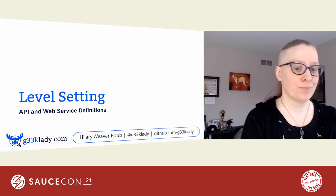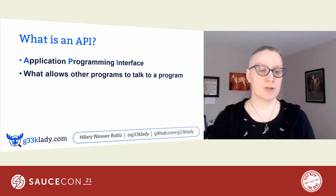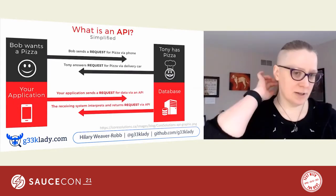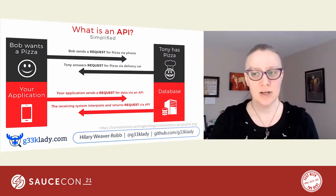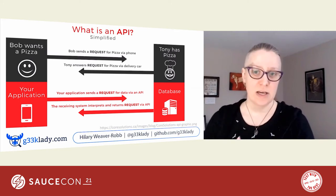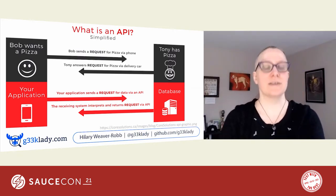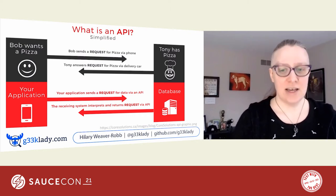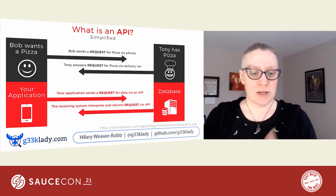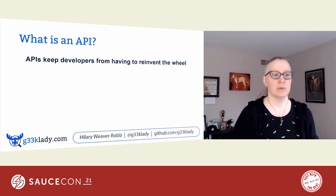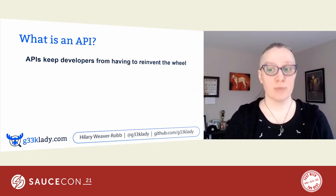Level setting — what is an API? An API stands for Application Programming Interface. It is what allows other programs to talk to a program. I found this simple diagram that is pretty helpful in explaining an API. Their explanation is: Bob wants a pizza, so he sends a request for a pizza on his phone, maybe with an app. Tony's pizza has pizza, so on that app he receives that request and sends Bob his pizza. Your application sends a request for data to maybe a database with the API. The database gets that request and sends a response. APIs help developers interact with each other's code and reuse code that someone else wrote — it really helps keep developers from having to reinvent the wheel every time.